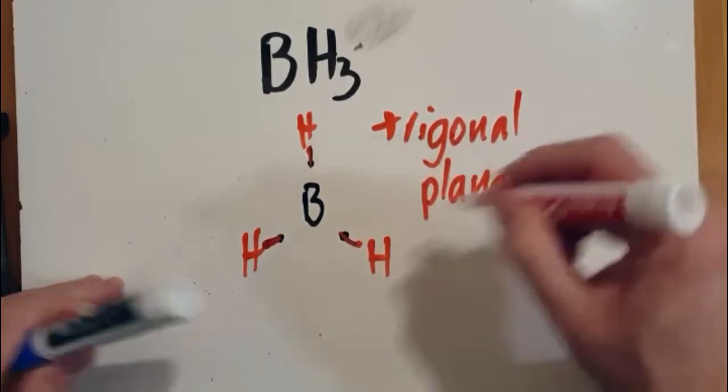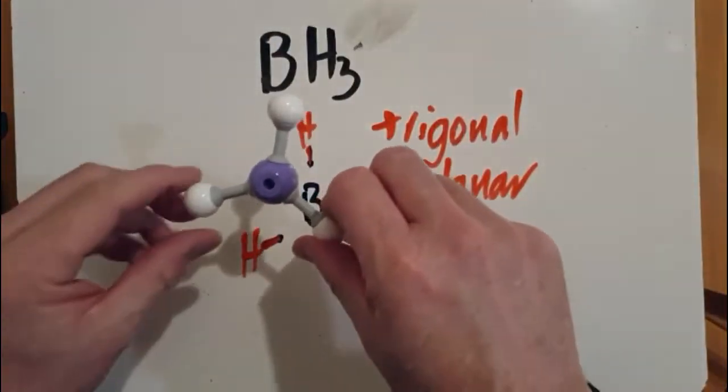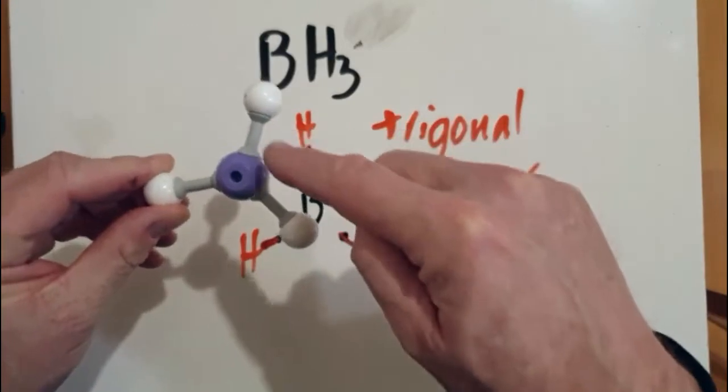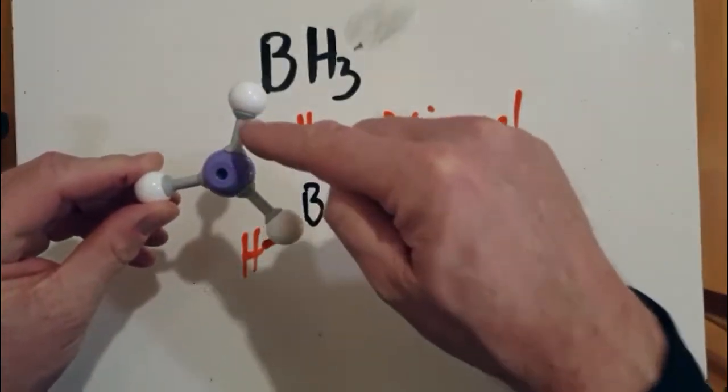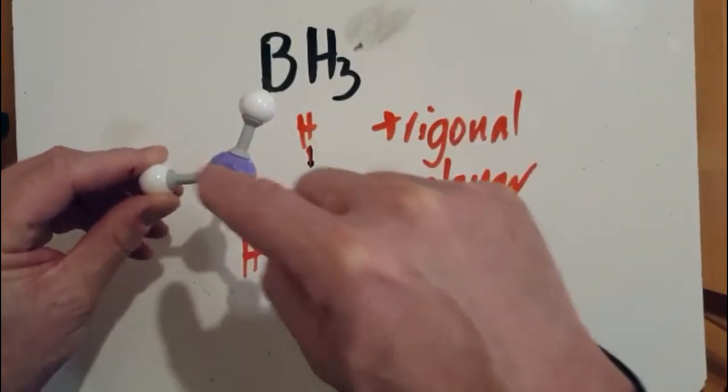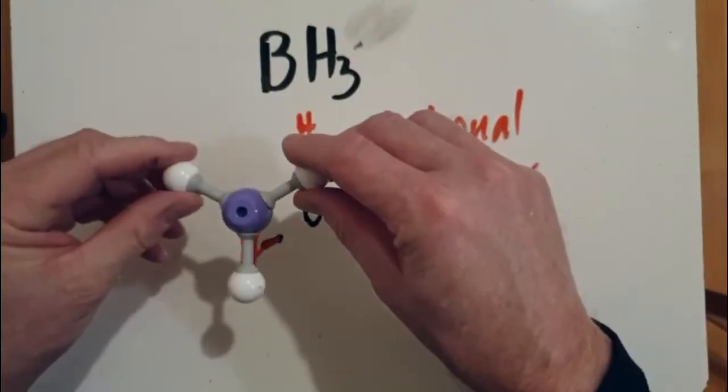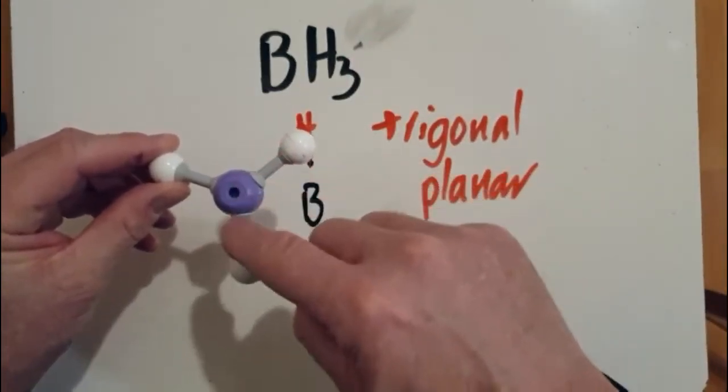And the reason for that is that these pairs of electrons in the valence shell repel each other equally. So if you've got three things that are repelling each other equally, how are they going to get as far away from each other as possible? Well, it's the size of an equilateral triangle.